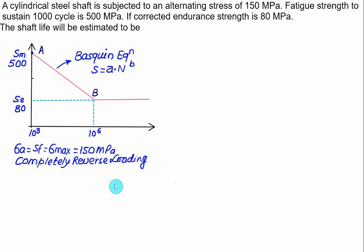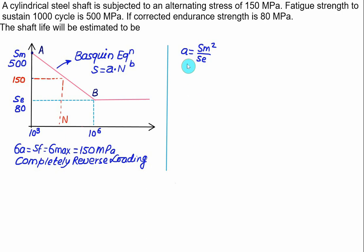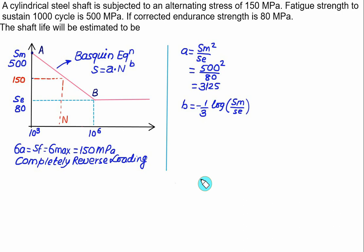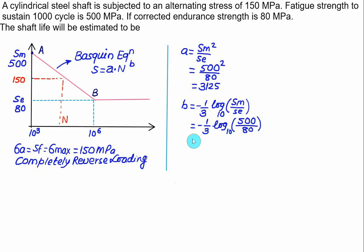We want to estimate the life for fatigue strength SF = 150, which is between SM = 500 and SE = 80. Find constants A and B using the Basquin equation. A = SM² / SE = 500² / 80 = 3125. B = −(1/3) × log₁₀(SM / SE) = −(1/3) × log₁₀(500 / 80) using base 10. B = −0.2653.